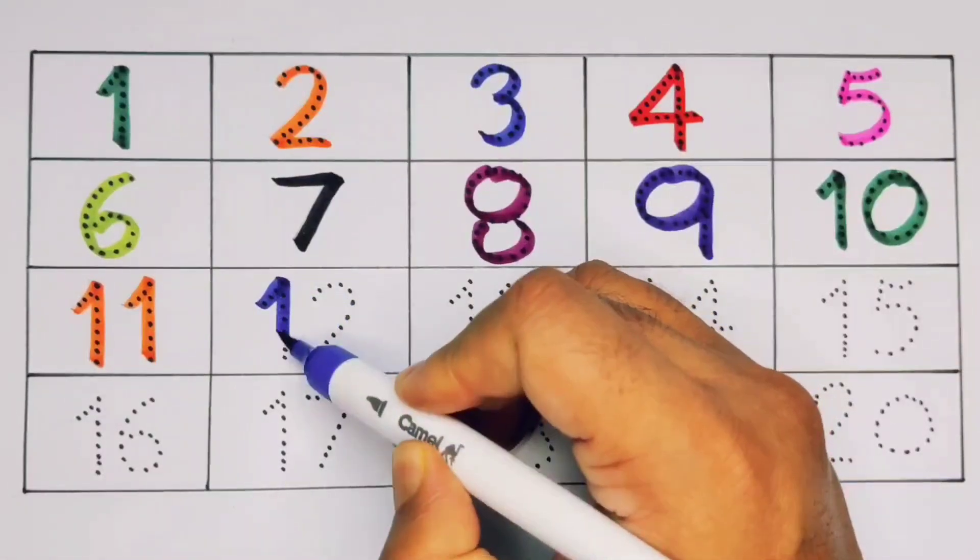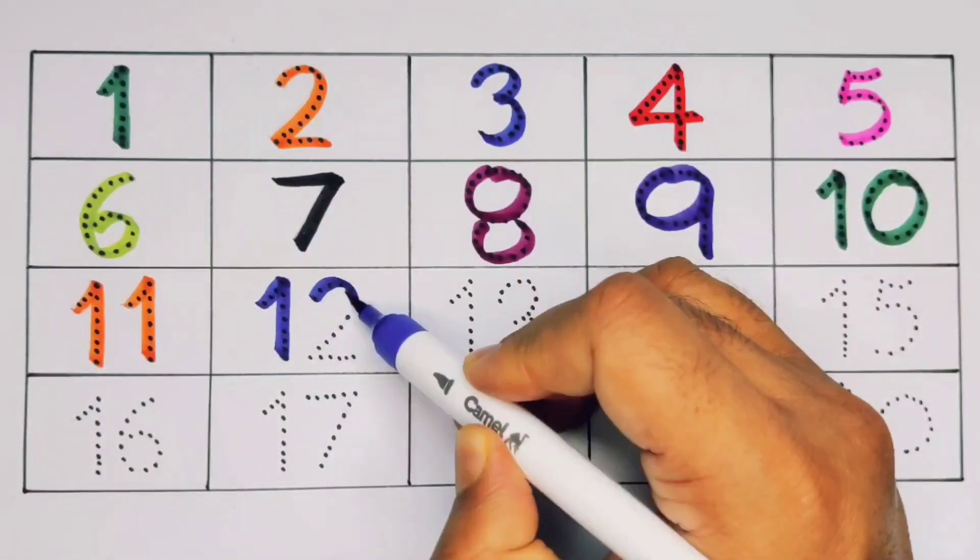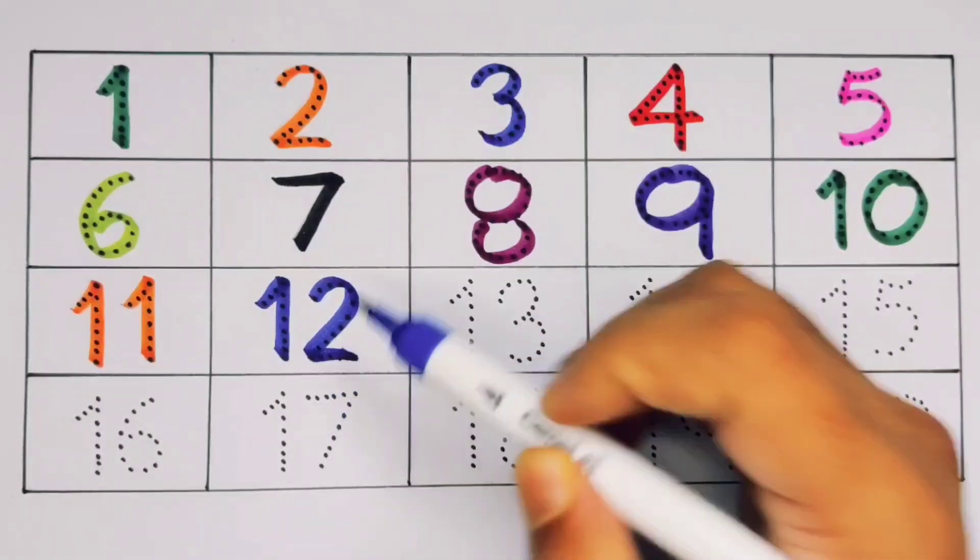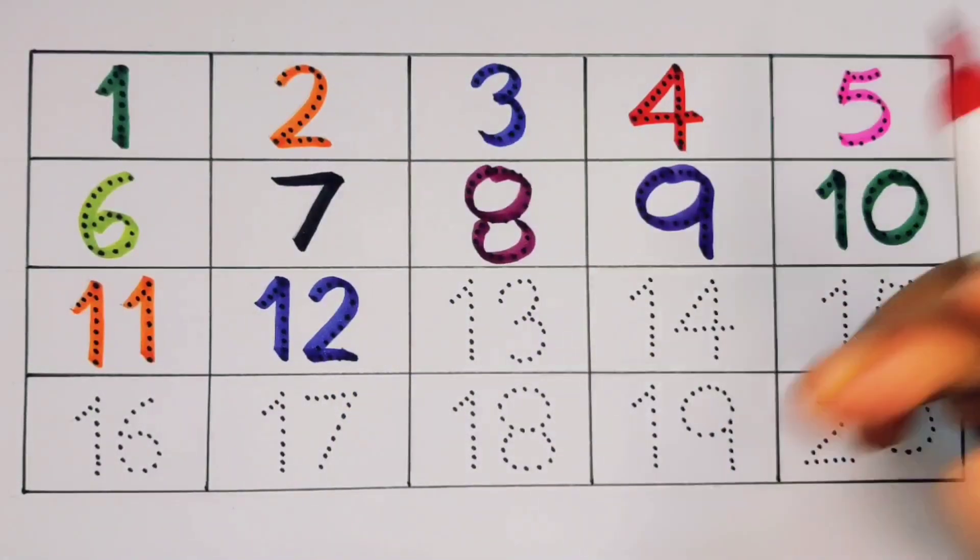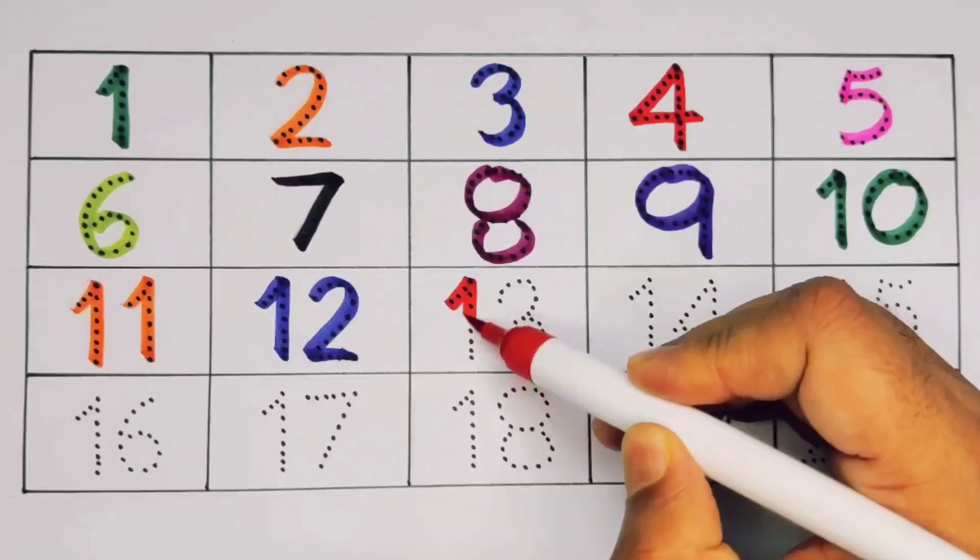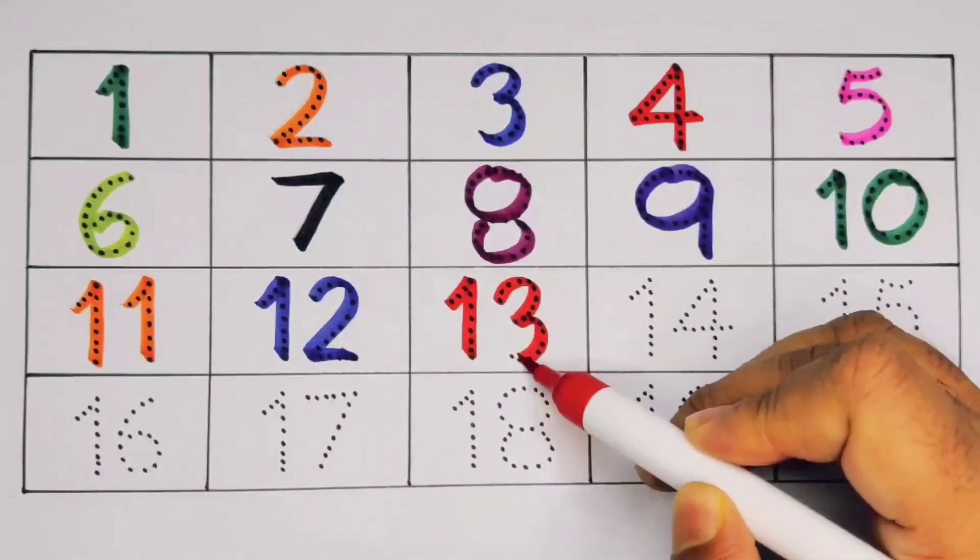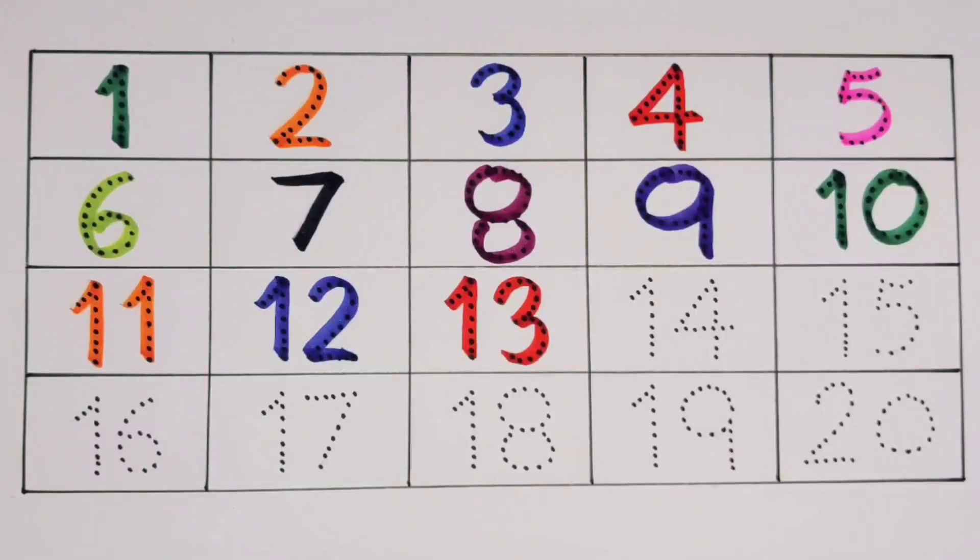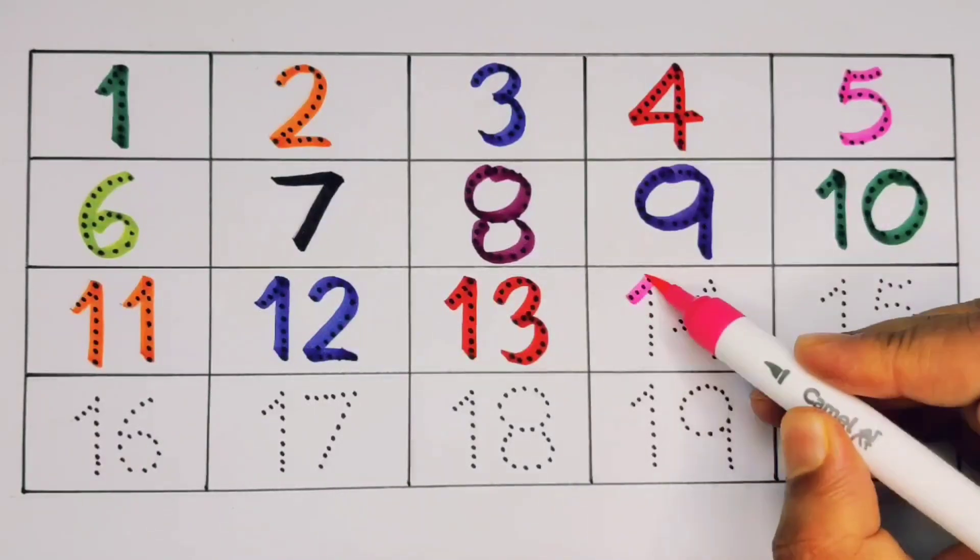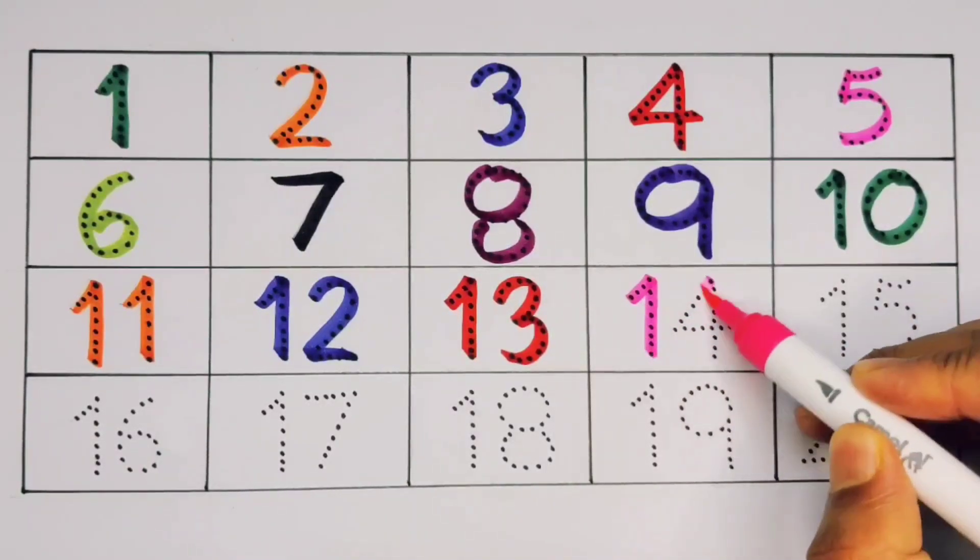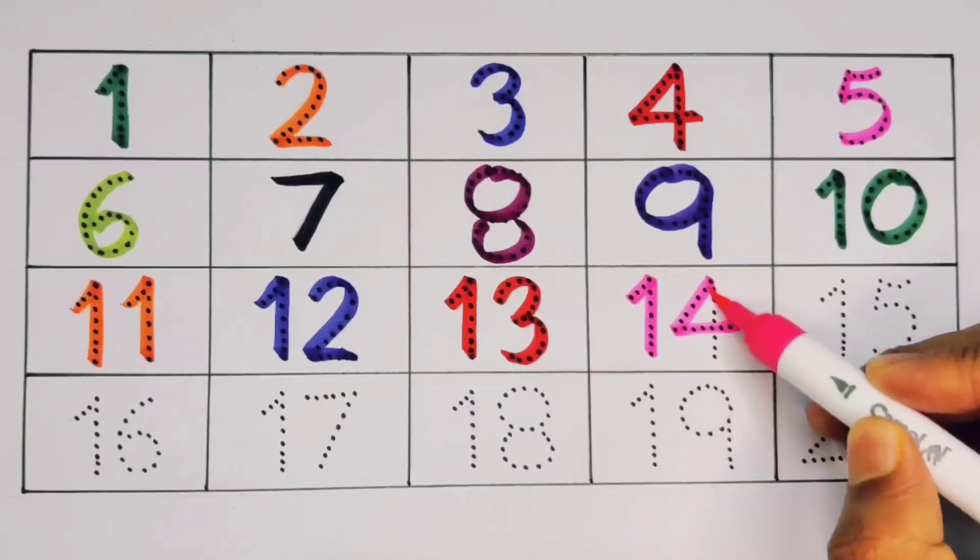It's twelve, one two, twelve, number twelve. Next, thirteen, one three, thirteen, number thirteen. Next, fourteen, one four, fourteen, number fourteen.